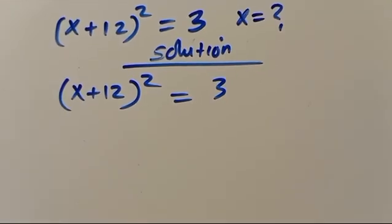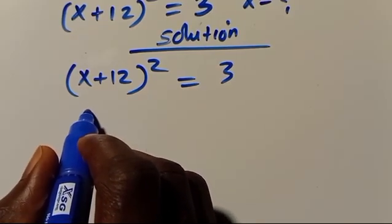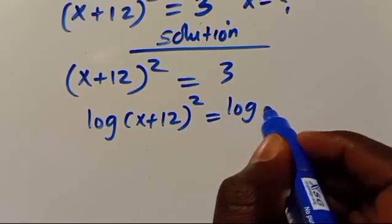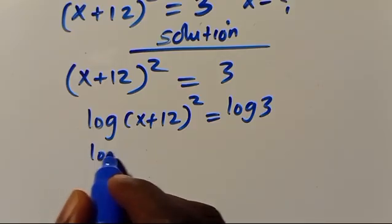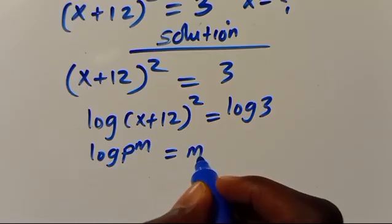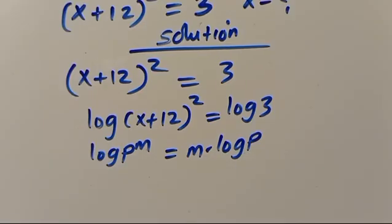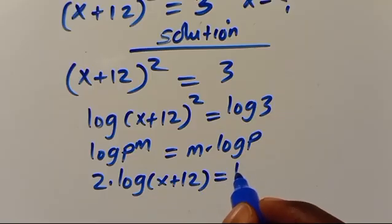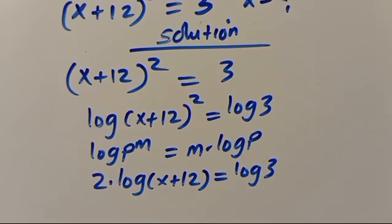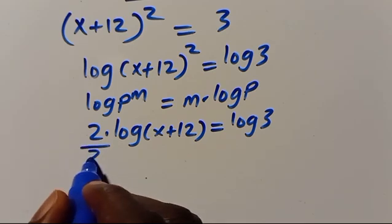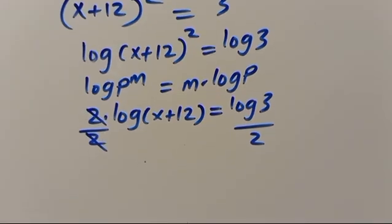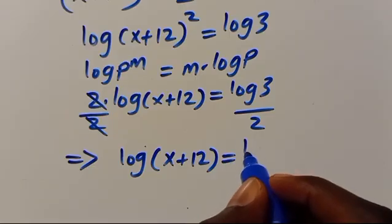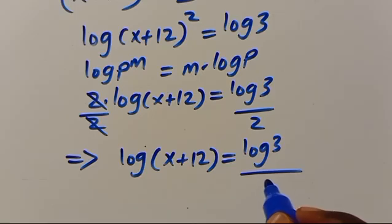Let us use Method 1 by introducing log to both sides. So here we will have log of (x + 12) to the power of 2 equals log 3. We recall that log p to the power of n equals n times log p. So from here we have 2 times log(x + 12) equals log 3.